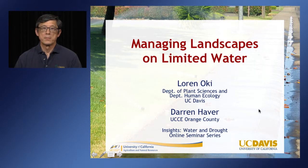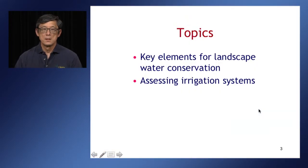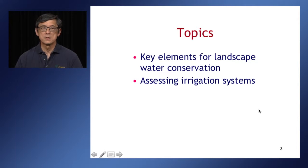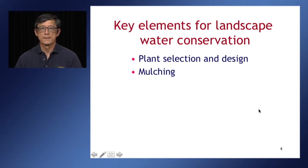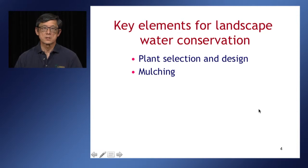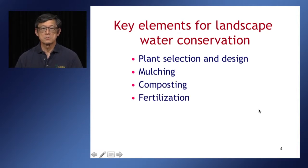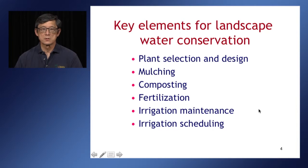We're going to talk about managing landscapes on limited water. The two main topics in the seminar are key elements for landscape water conservation, and describing how to assess the irrigation system for proper operation. Under key elements for landscape water conservation, we'll be discussing plant selection and design, the use of mulches, use of composts, fertilization, and irrigation maintenance and irrigation scheduling.